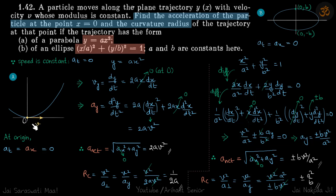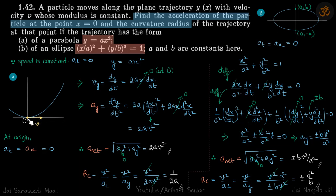Since we are given a path, we will break acceleration into tangential (at) and normal (an) components. Because velocity is constant in both cases, we can directly say that at is equal to 0. Tangential acceleration is 0 because the tangential velocity is constant at v. Now at the origin, at is in the x direction, so ax is also equal to 0.